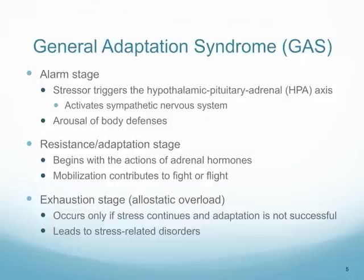If this stressor continues — if we are being chased by this lion for hours or days — we start to enter the resistance or adaptation stage, where we begin to resist or adapt to this process. And lastly, we will eventually end up in the exhaustion phase, where if the stress continues, we use up our stress hormones, adaptation is not successful, and this can lead to disorders, including decreased immune and inflammatory function as a result of high levels of epinephrine, norepinephrine, and cortisol.